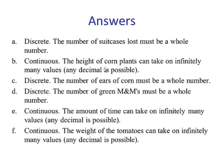Here's the answers. A is discrete. Number of suitcases lost must be a whole number. You can't lose two and a half suitcases. B is continuous. Height is a physical measurement and we can take it to whatever decimal place we would like. C is discrete. The number of ears of corn must be a whole number. D is discrete. The number of green M&Ms must be a whole number.